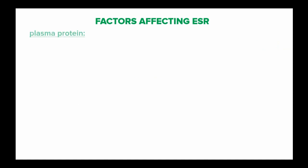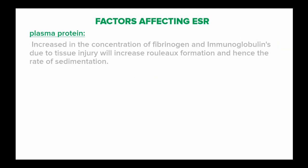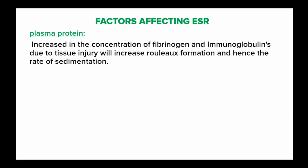There are various factors which affect the rate of erythrocyte sedimentation. For example, plasma proteins: an increase in the concentration of fibrinogen and immunoglobulins, due to tissue injury, will increase rouleaux formation and therefore increase the rate of sedimentation. Plasma albumin, on the other hand, retards sedimentation of the red blood cells.